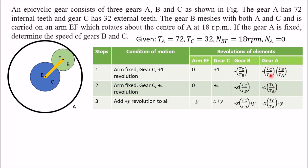For the third row, add Y to each entry of the second row: arm becomes Y, gear C becomes X plus Y, gear B becomes minus (Tc/Tb)·X plus Y, and gear A becomes minus (Tc/Ta)·X plus Y. This final row represents the speed of each corresponding gear or arm.